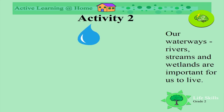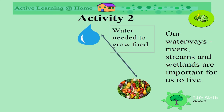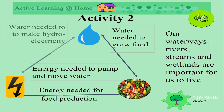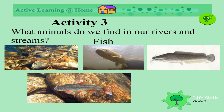Our waterways, streams and rivers are very important for us to live. Water is needed to grow food, energy is needed for food production, and water is needed to make hydroelectric power. Energy is also needed to pump and move the water. We need to look after our water, save it, and make sure we use it sparingly.